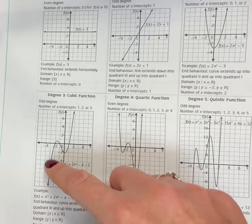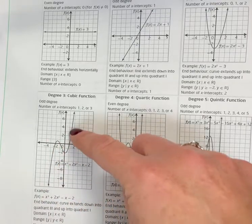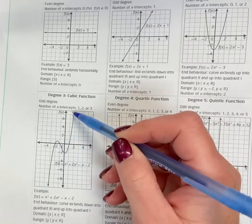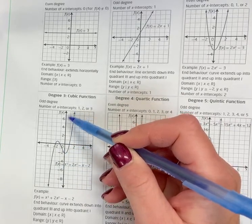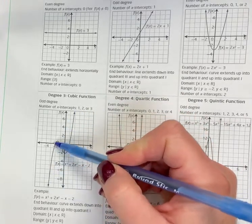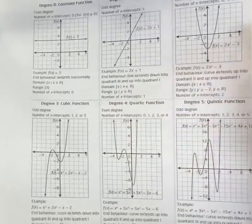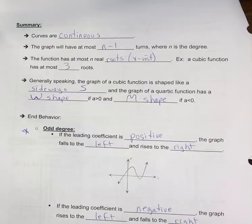Continuous curve just means that you don't need to lift your pencil to draw it. In other words, there's no asymptotes. It's a curve, not a rigid V shape like an absolute value. Continuous means there's no asymptotes, you're not lifting your pencil.